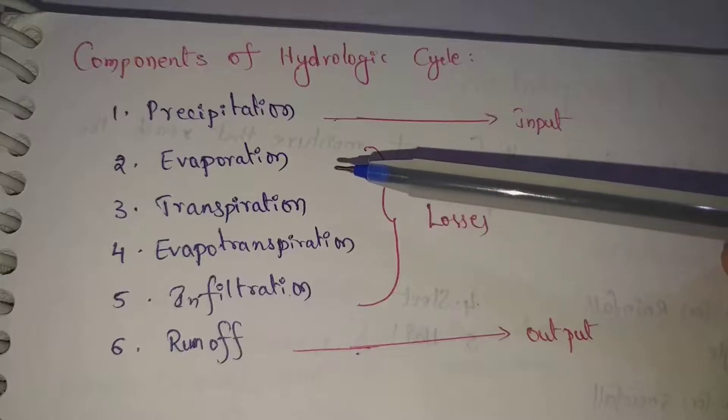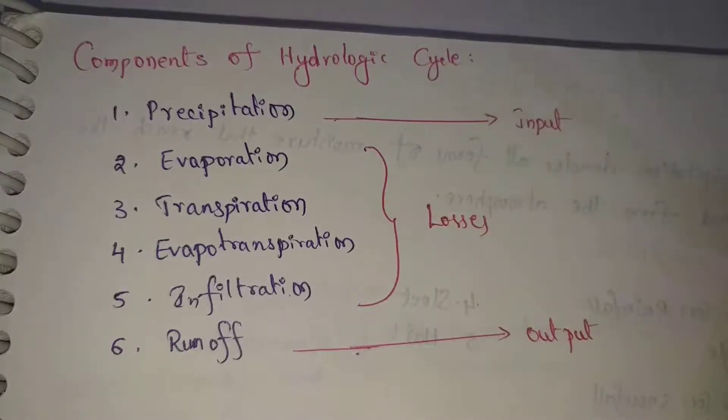Next one is transpiration. Transpiration is one type of water loss where water is released from plants. This is transpiration.